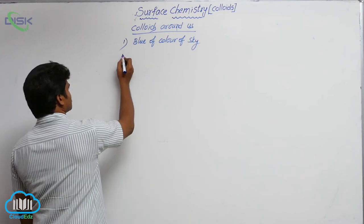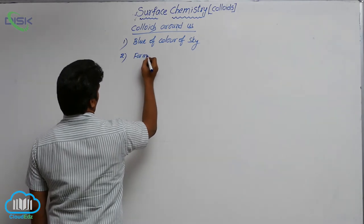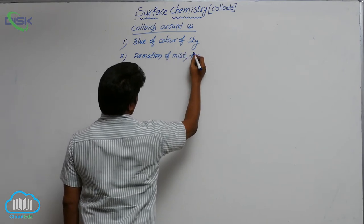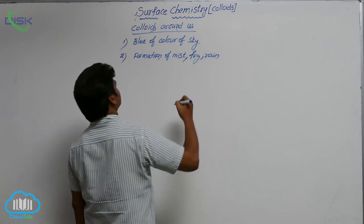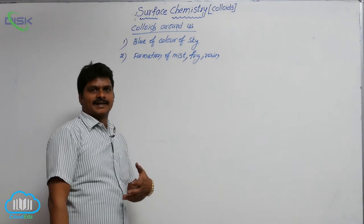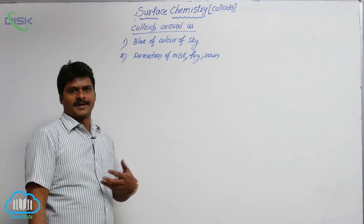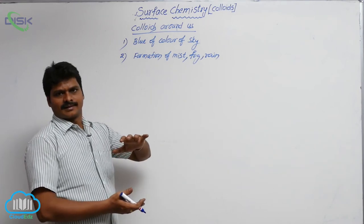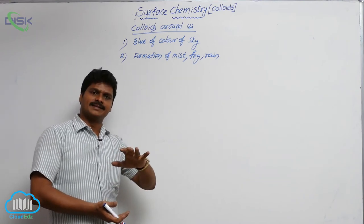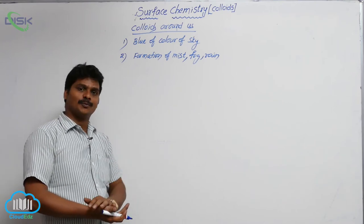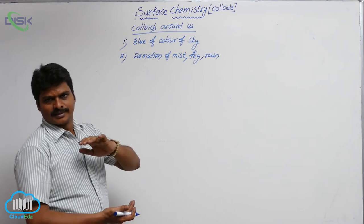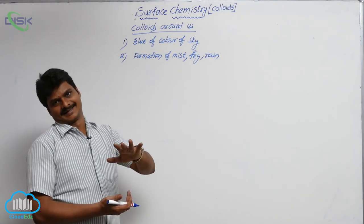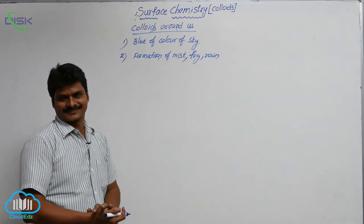This color may change sometimes — clouds show different colors, which is due to the difference in the size of colloidal particles. The second example is the formation of mist, fog, and rain. Air contains dust particles and smoke particles (carbon particles). When, for some reason, the temperature of the air is decreased below its dew point, the air is cooled.